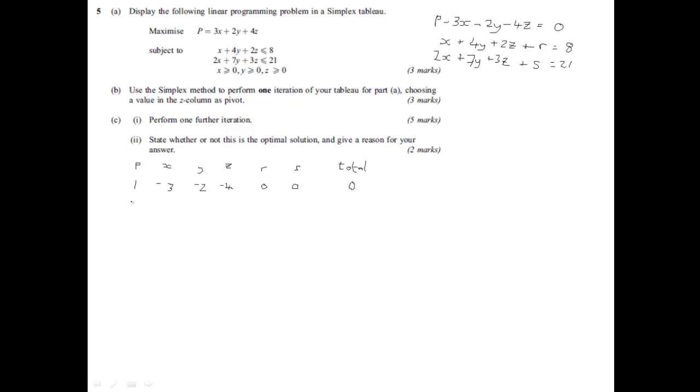For our first constraint equation, we've got 0 here for p. We've then got 1x, 4y, 2z, 1r, no s, and the total's 8. And then finally for this first part, the second constraint equation, well again, no p involved. We've got 2x, 7y, 3z, and this time we've got s as our slack variable, and it's 21. So that's the first three marks.